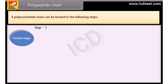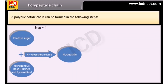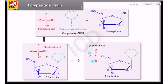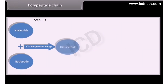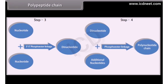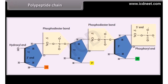A polynucleotide chain can be formed in the following steps. A polynucleotide chain has a phosphate moiety at one free end of ribose sugar. This is known as the 5-prime end of the polynucleotide chain. The other free end of ribose sugar has an attached OH group. This is called the 3-prime end of the polynucleotide chain.